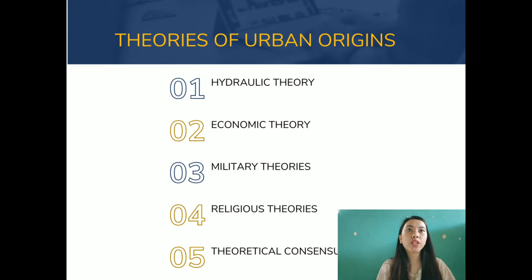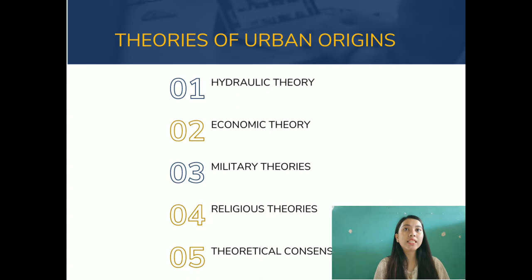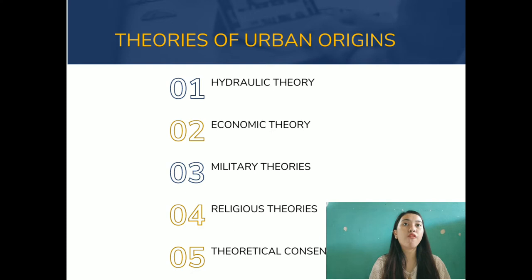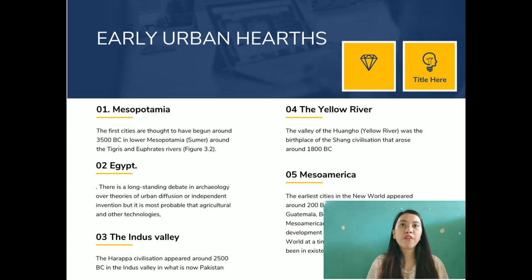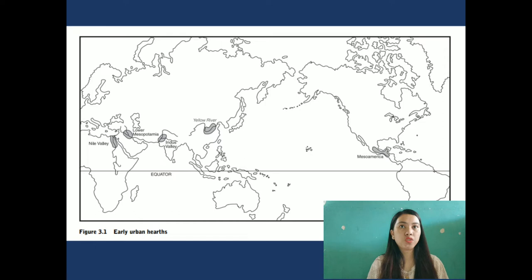Regarding theoretical consensus, it is doubtful if a single autonomous causative factor will ever be identified in the nexus of social, economic, and political transformations that resulted in the emergence of urban forms of living. A more realistic interpretation is that the concept of an urban revolution should be replaced by the idea of an urban transformation involving a host of factors operating over a long period of time.